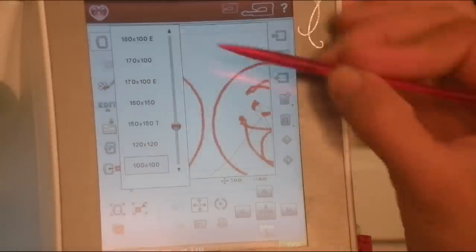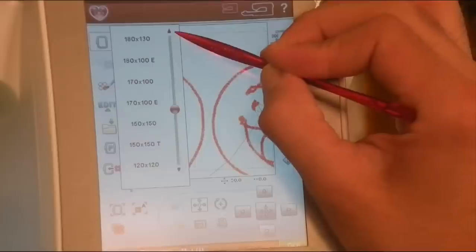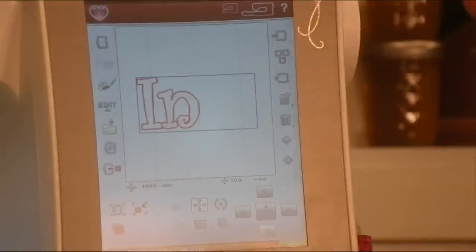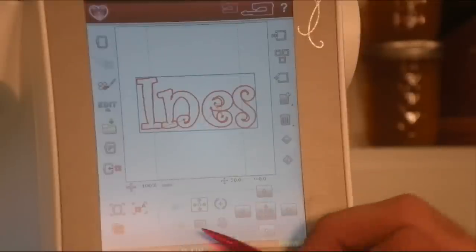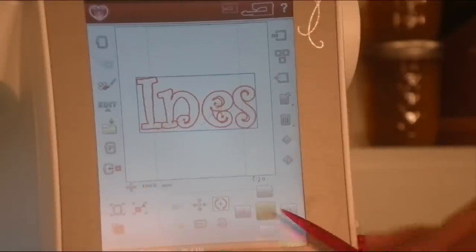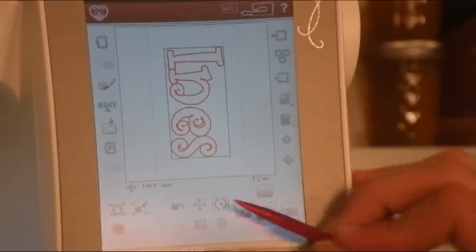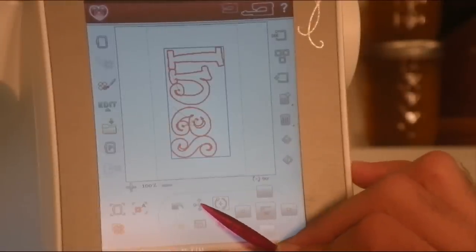And now you can see all your stitches. I need to go into my 360 by 200 hoop and see it. Now from here I'm going to go ahead and select these rotating arrows and rotate it 90 degrees until it is the way I want it.